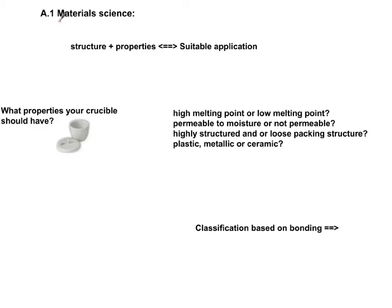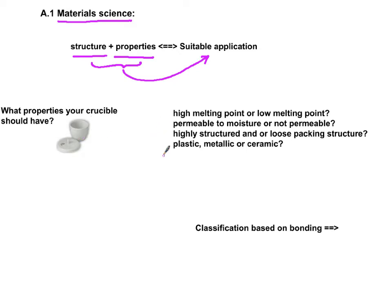To start this unit on material science, we first go after what choices we have in materials and how to classify them. The structure and property of something can yield a suitable application for the purpose someone has in mind. For example, if you want to have a crucible, the question is what properties should this crucible have. Some of the choices are: should it have a high melting point or low melting point?